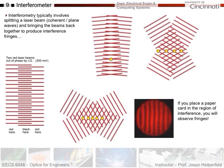Let's talk about interferometry, which is the main goal of this week. Interferometry typically involves splitting a laser beam — a coherent source with all the plane waves lined up — and then bringing the beams back together to produce interference fringes.